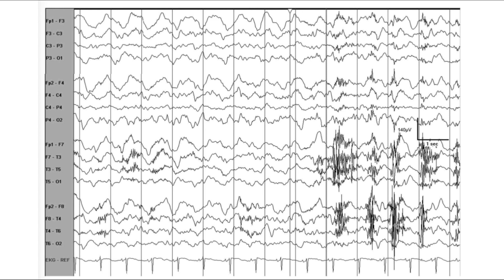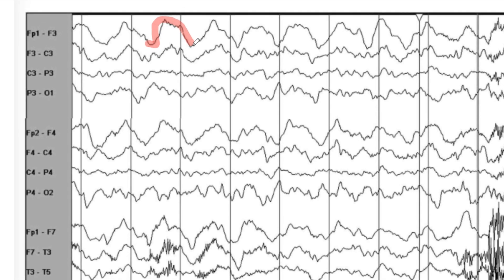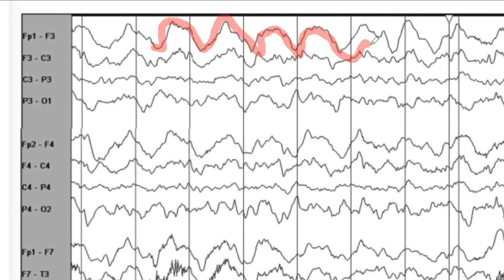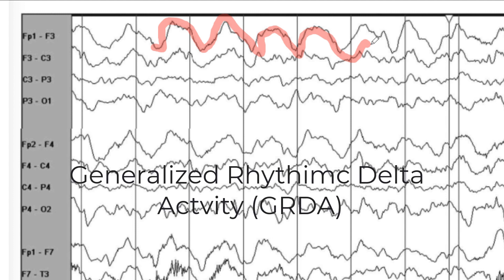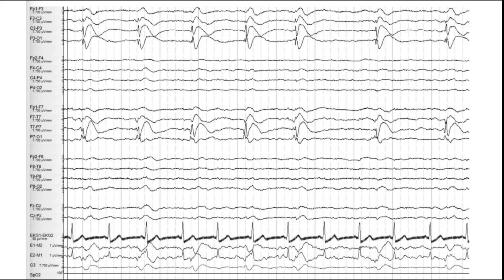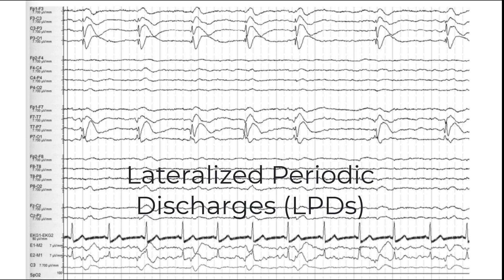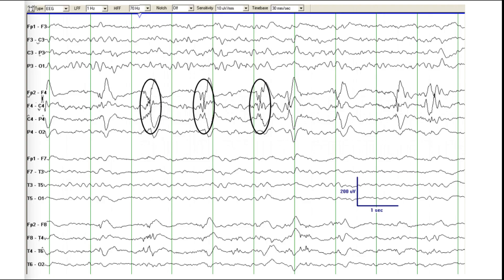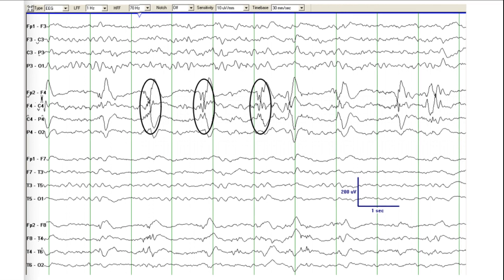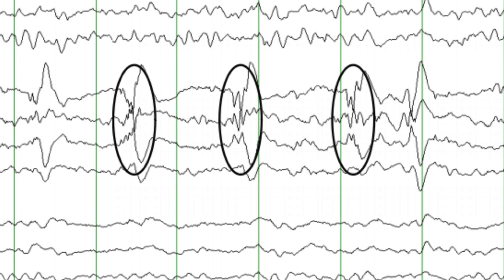This next pattern is also generalized and roughly symmetrical in both hemispheres, but is clearly rhythmic with a continuous pattern and no inter-discharge interval — therefore we call this generalized rhythmic delta activity, or GRDA. Here is a pattern present almost exclusively in one hemisphere with discharges followed by an inter-discharge interval — lateralized periodic discharges, maximal in the left posterior head region. Another example of lateralized periodic discharges maximal in the right frontal region has associated fast activity with each discharge, so we add the modifier plus F.